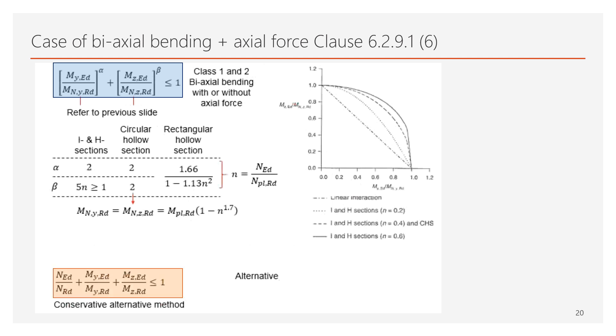The value of alpha and beta differ among the different type of member. The blue rectangle is for the I and H sections, the orange is for the circular hollow sections, and the green one is for the rectangular hollow sections. For the rectangular hollow sections, the alpha and beta will be the same. The N stands for the load ratio, as we used to it.